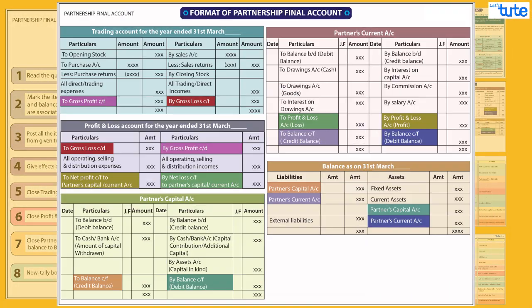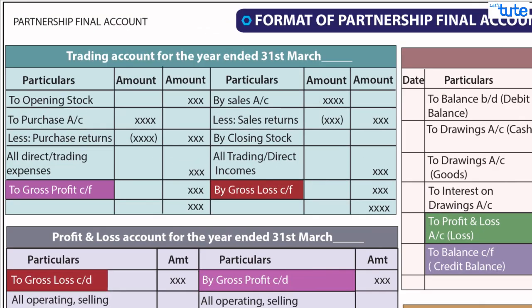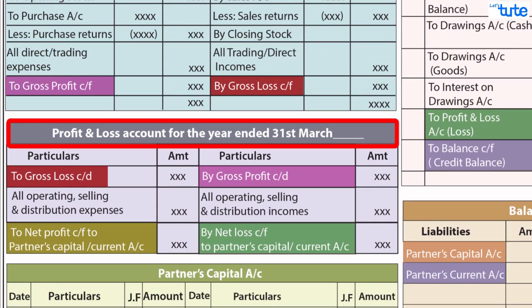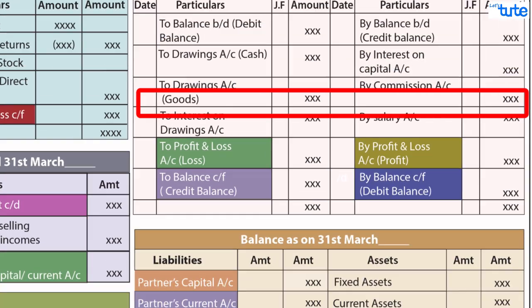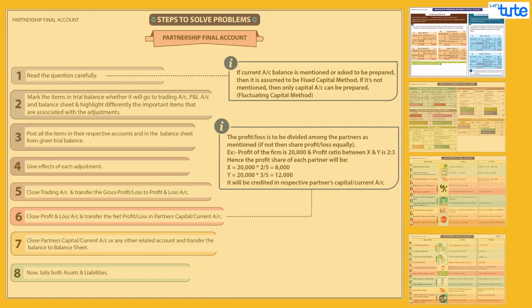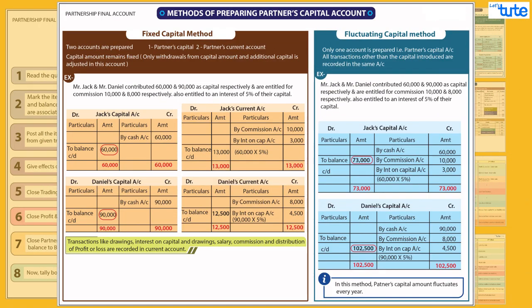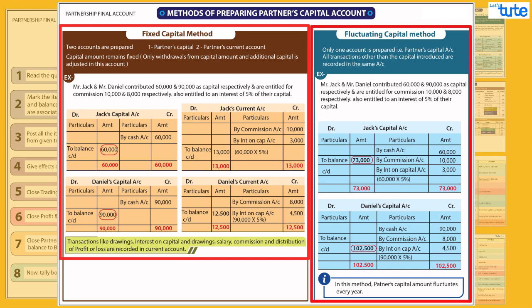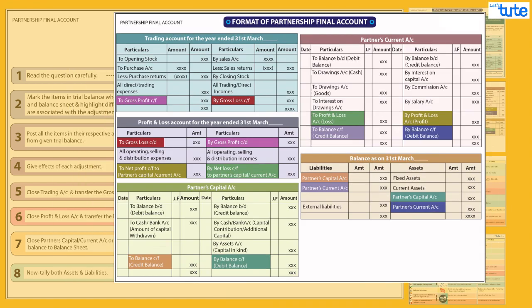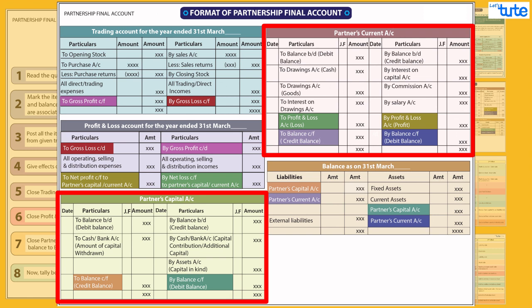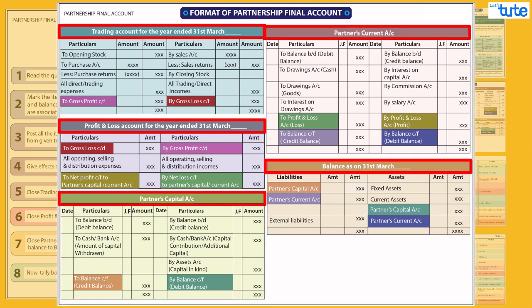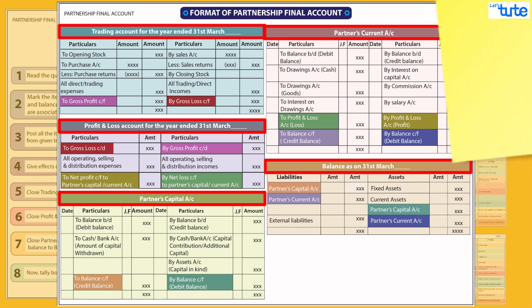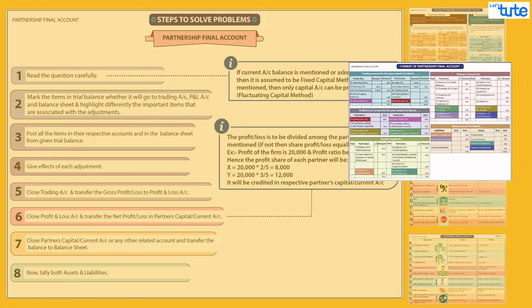Focus on accounts to be prepared — that is, the trading account, profit and loss account, partners' capital or current account, and balance sheet. Also check which capital method will be applied — fixed or fluctuating — and according to that, prepare partners' capital or current account. Prepare proper formats with proper headings, as all these carry marks.